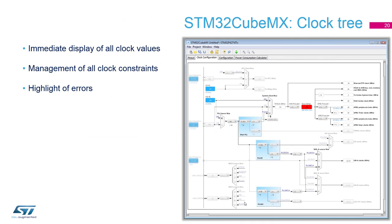The next is the clock configuration — it's a nice tree. The function of this tree is to view the frequencies used and dividers. Also, it can automatically calculate frequencies. When you set, for example, 180 MHz as the maximum, the dividers are automatically set to the proper values.